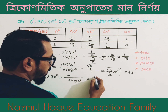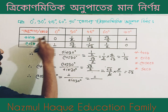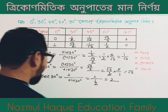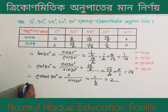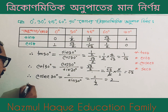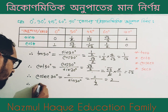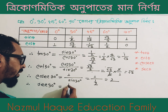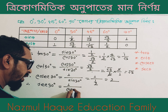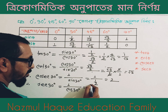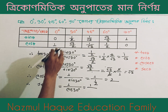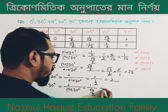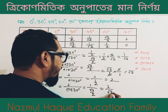1 divided by sin 30 degree — sin 30 degree is one half, which gives us 2. So cosec 30 degree is 2. And 1 divided by cos 30 degree — cos 30 degree is root 3 by 2 — gives us 2 divided by root 3. So sec 30 degree is 2 divided by root 3.